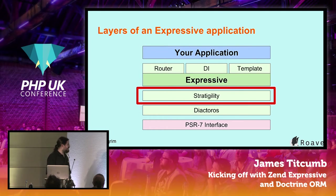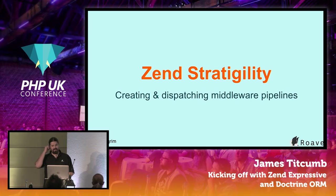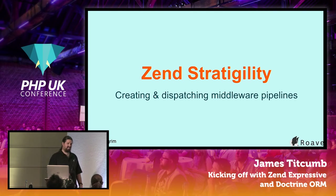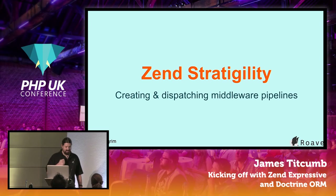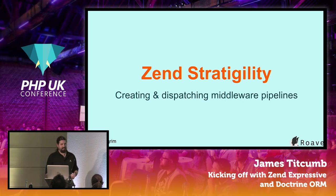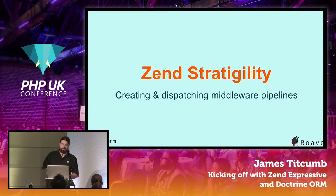Stratagility is the next layer — another silly-sounding name. Zend loved the name 'Agility' a lot and used that kind of theme. This is a library for creating and dispatching middleware pipelines. It's built to rely on the PSR-7 implementation — in theory any PSR-7 implementation would work, but we're going to use Diactoros for this.